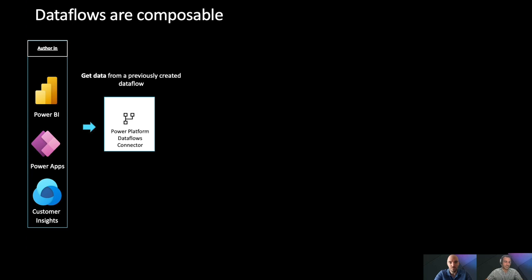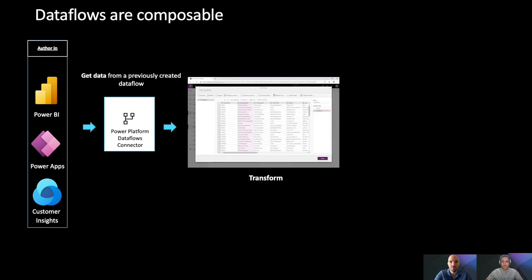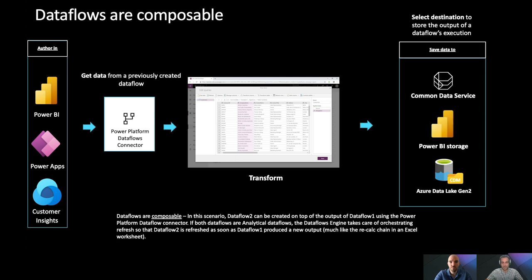One thing that's cool about analytical dataflows is that they're composable. A dataflow is a pipeline that loads data into a destination, but you can create other dataflows that load data from those dataflows. You can choose the Power Platform dataflow connector and see entities that other dataflows have created — these are called computed entities. When one dataflow completes its refresh, if you've composed another dataflow on top of it within the same environment or workspace, that will trigger the downstream dataflow to refresh as well, allowing you to build complex data pipelines that stay in sync.